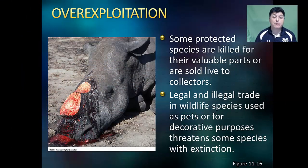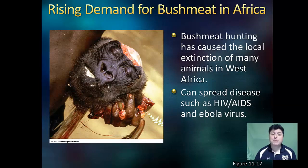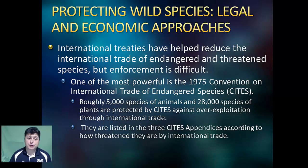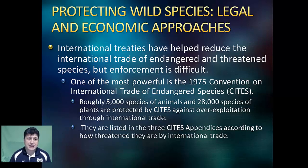Some protected species are killed for their valuable parts or sold live to collectors. Legal and illegal trade in wildlife species used as pets or for decorative purposes threatens some species with extinction. Bushmeat hunting has caused the local extinction of many animals in West Africa, and can spread diseases such as HIV and the Ebola virus. International treaties have helped reduce the international trade of endangered and threatened species, but enforcement is very difficult. One of the most powerful international treaties is the 1975 Convention on the International Trade of Endangered Species, abbreviated CITES.